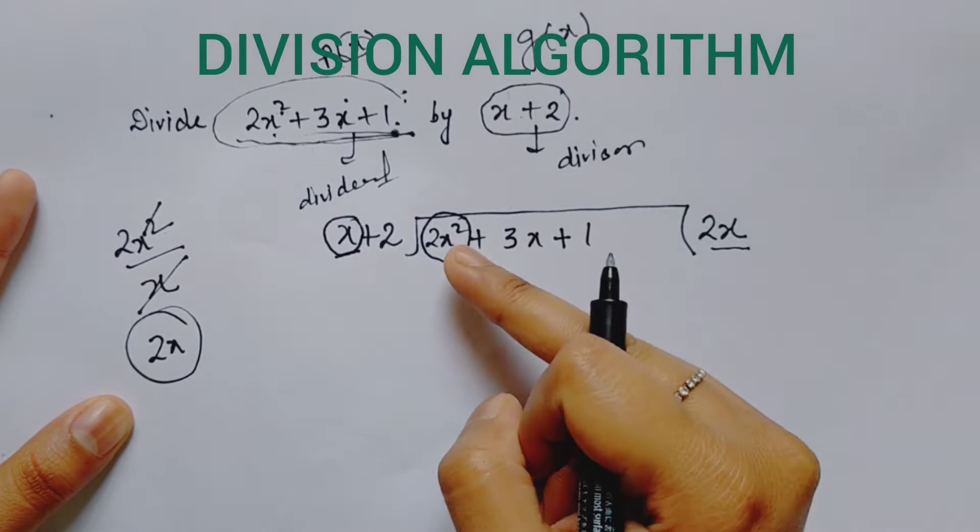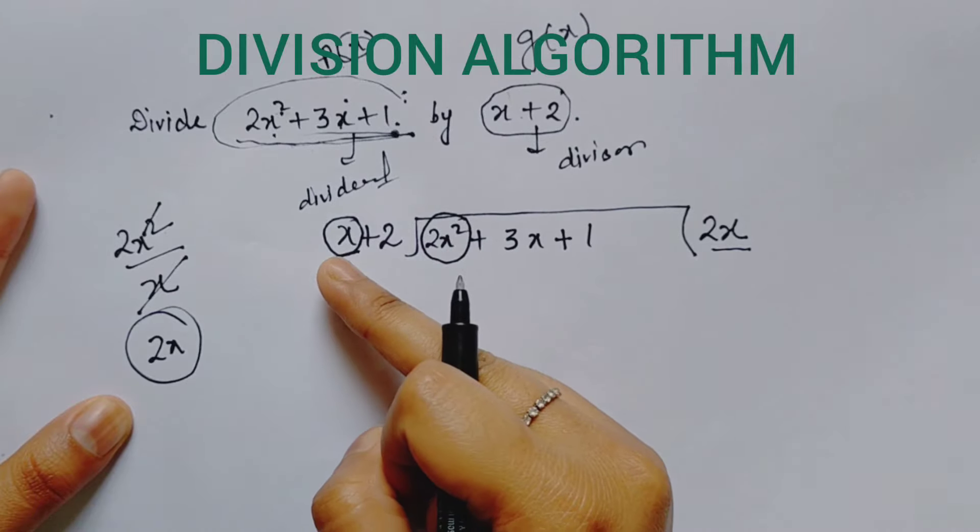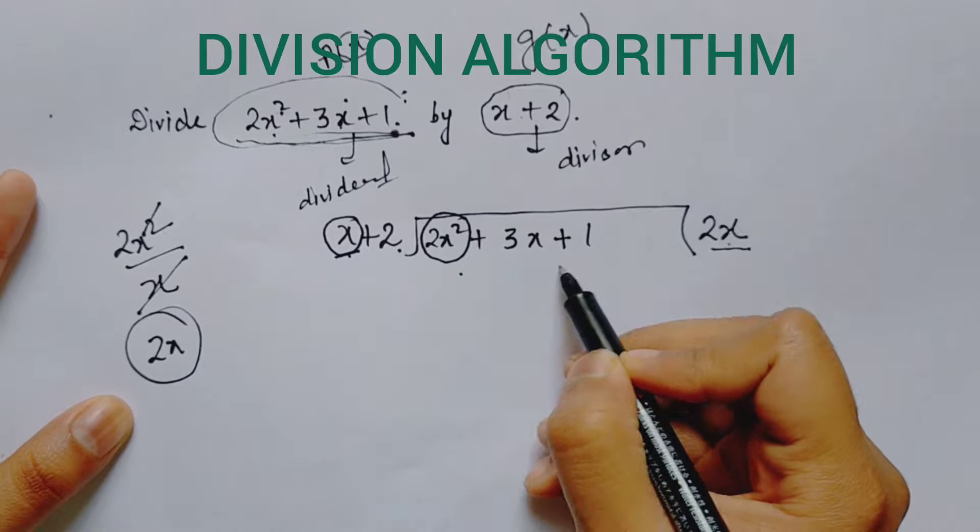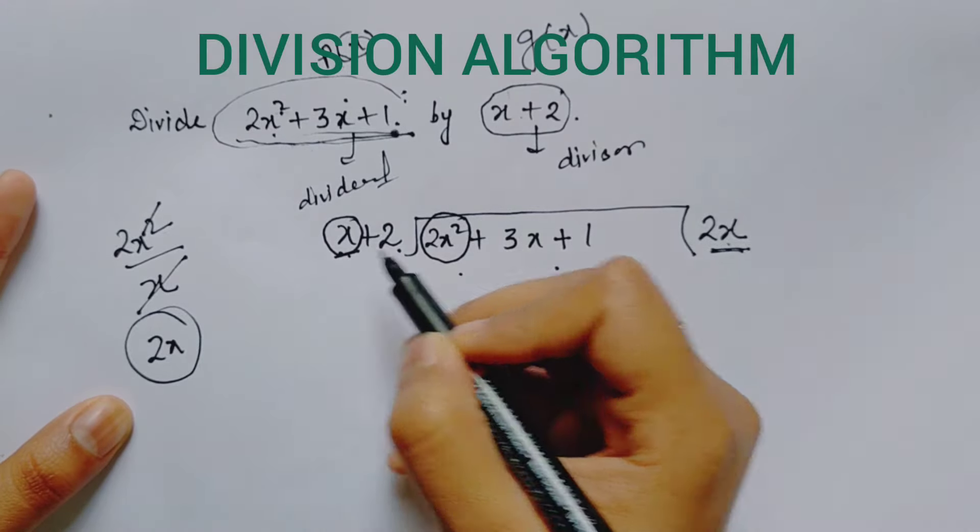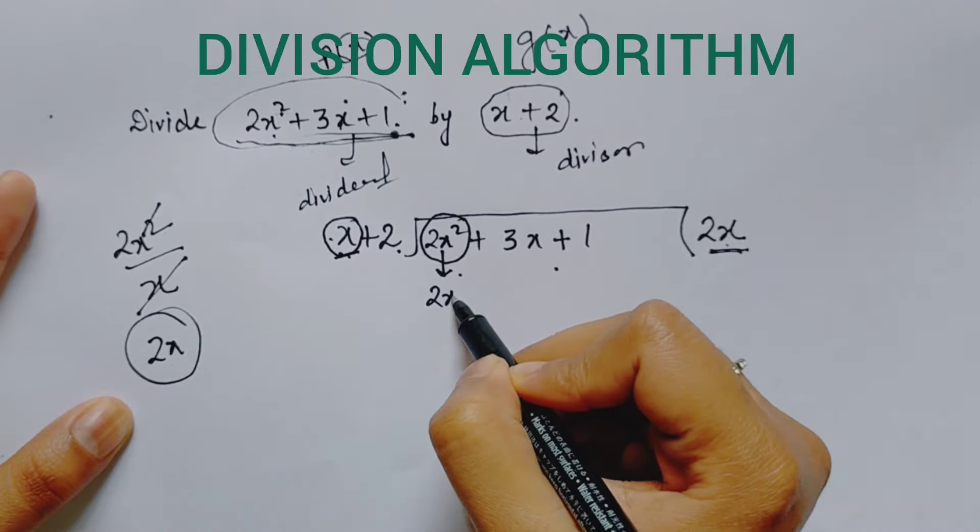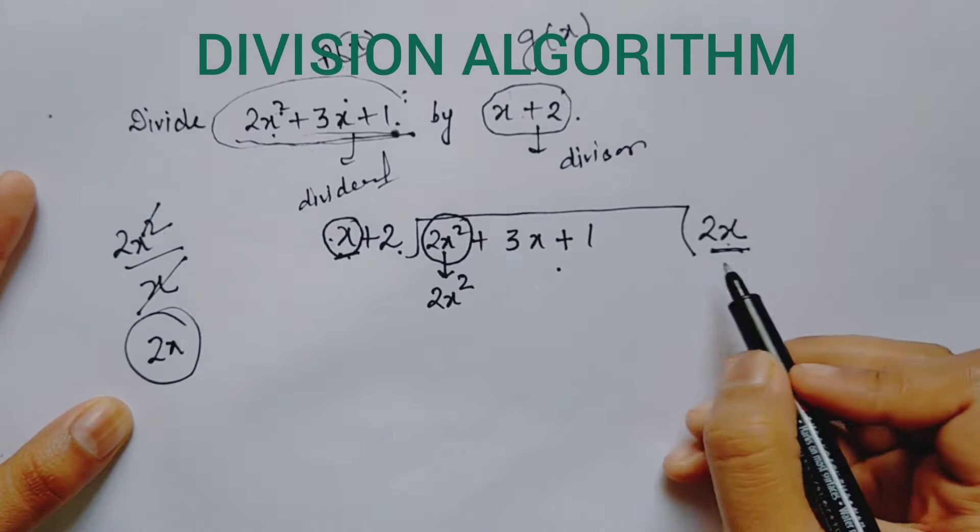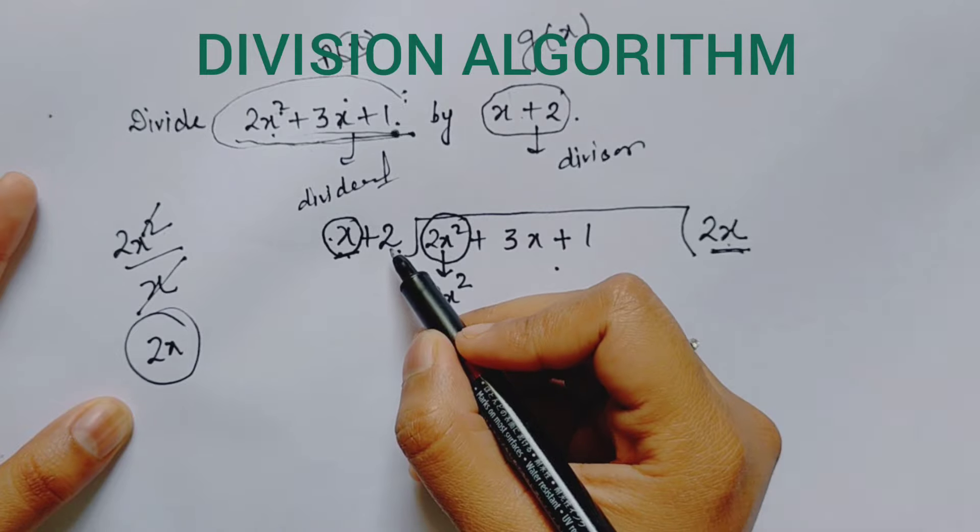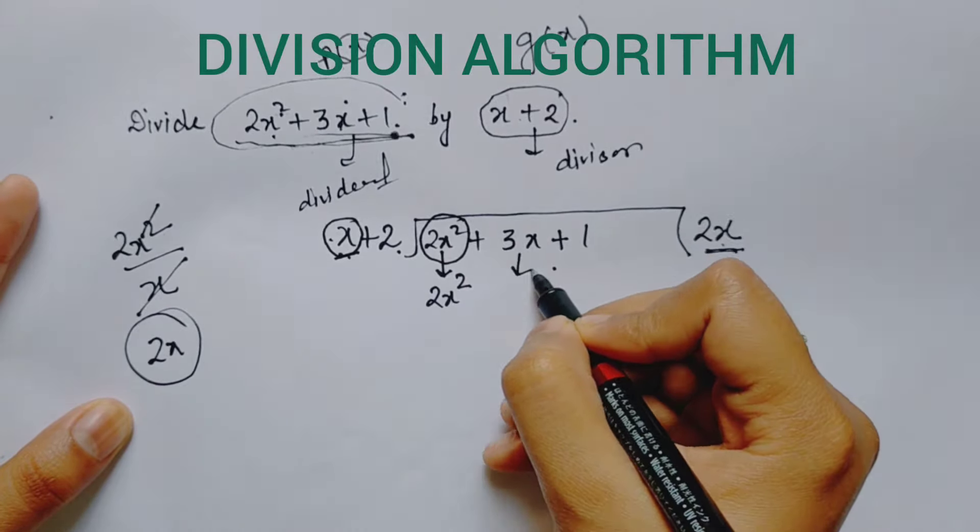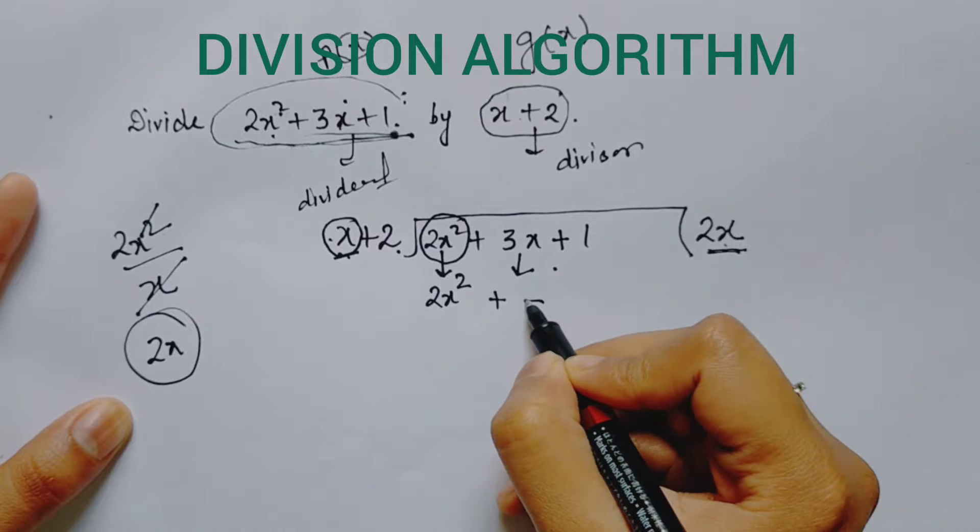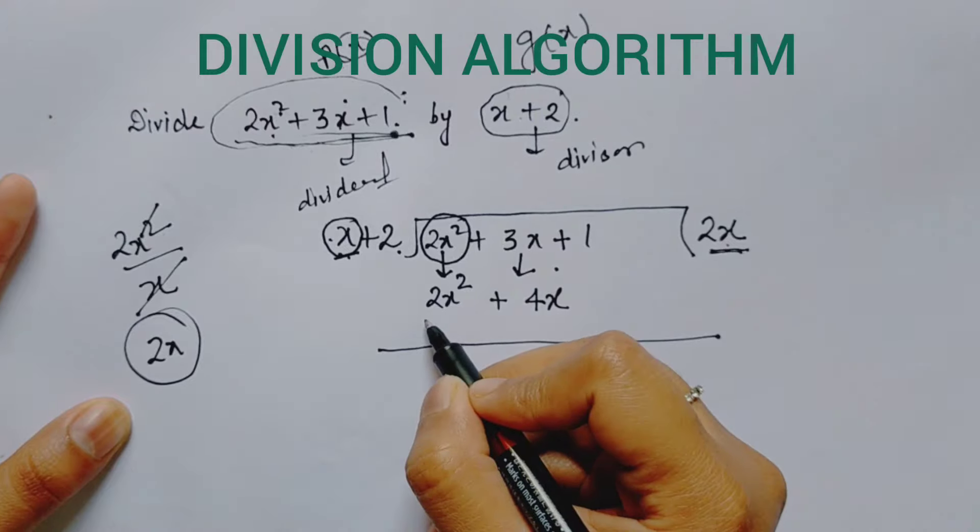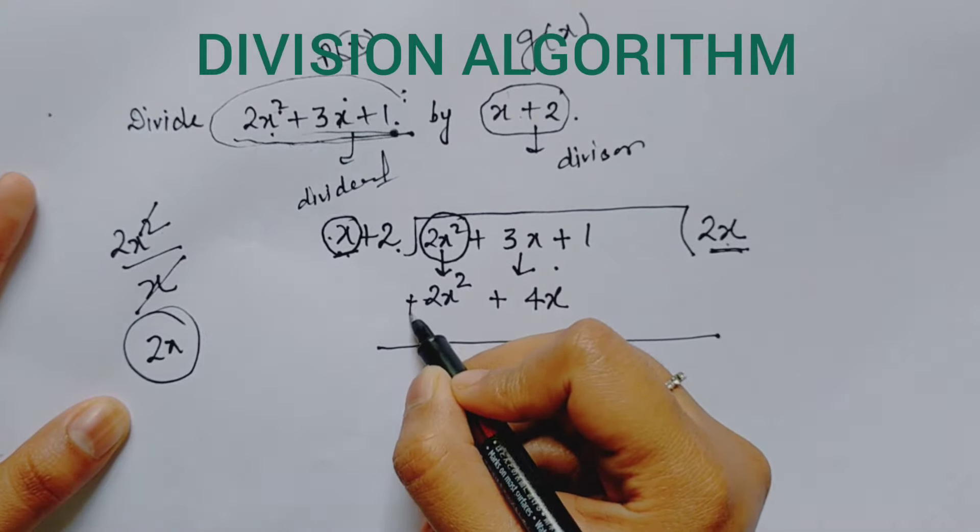When I divide, x will be cancelled and I will get 2x. So I write 2x here. The first term is obtained by dividing the first term of the dividend by the first term of the divisor. Now multiply 2x by both terms and write below. 2x times x gives 2x squared. 2x times 2 gives plus 4x.